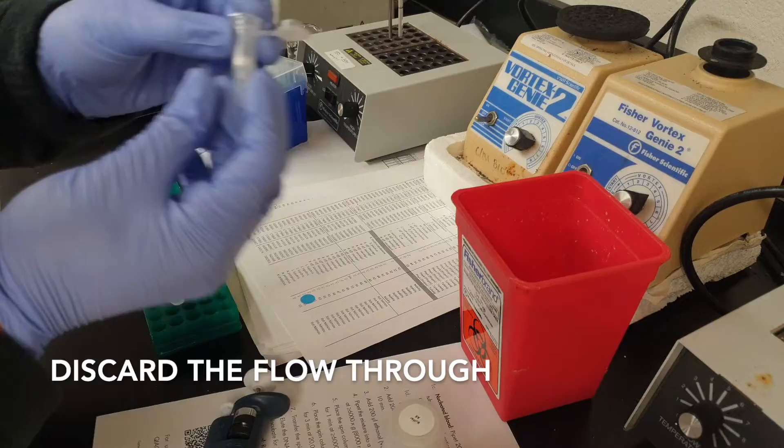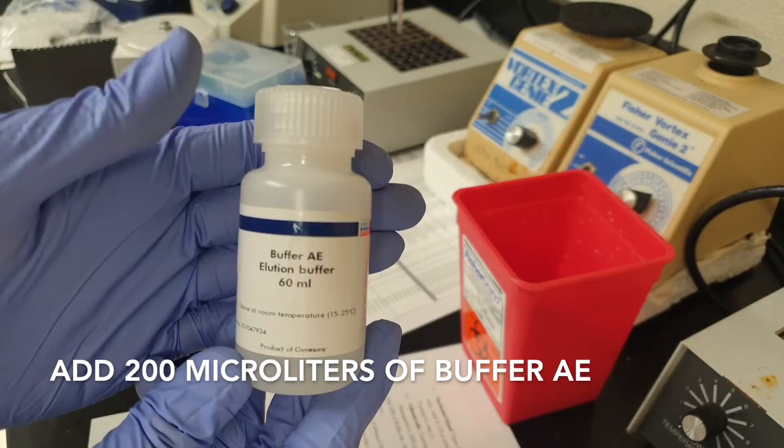Now discard the flow-through; that solution should have AW2 in it. Then transfer the spin column into 1.5 ml tubes, not 2 ml this time.